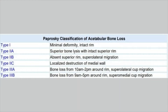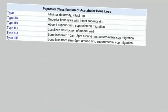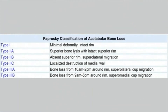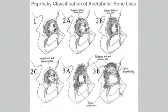In type 2a, there is superior bony lysis with an intact superior rim. In type 2b, there is rim loss — absent superior rim with superolateral migration. In type 2c, there is localized destruction of the medial wall, as you can see here. Type 2c involves localized destruction of the acetabular wall.